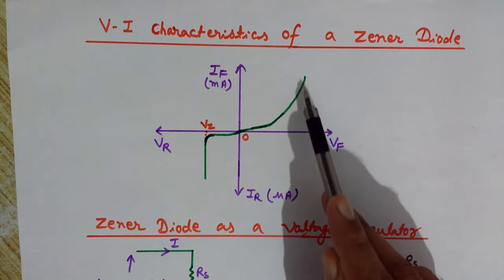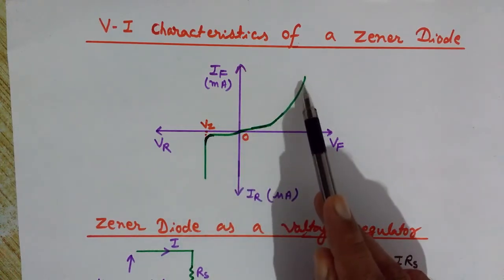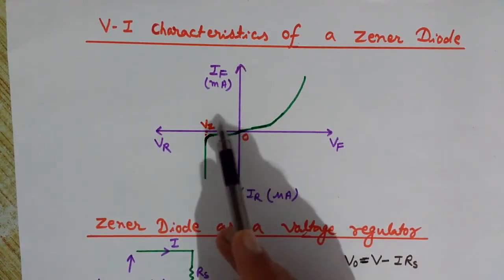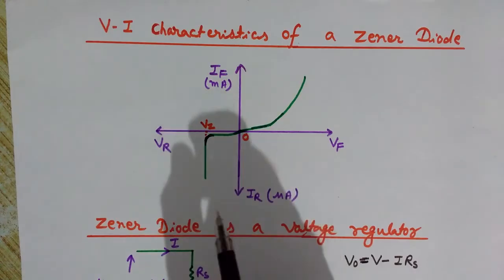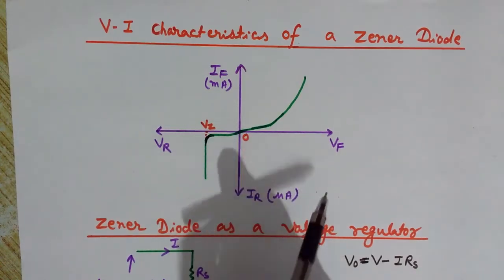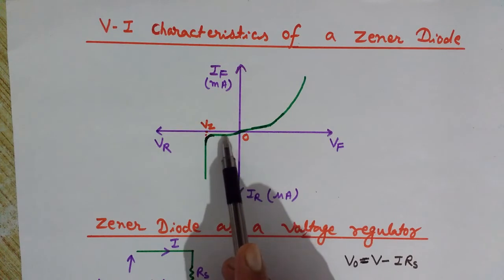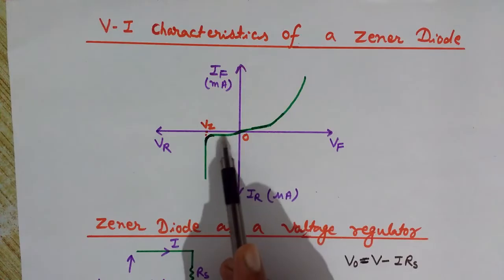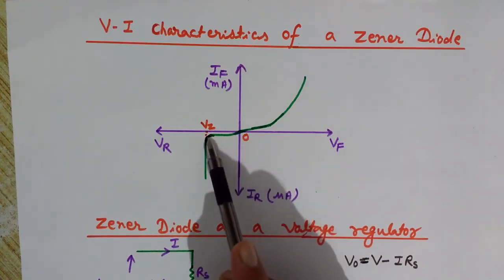Now let's look at the VI characteristic of the zener diode. In forward biasing, the curve looks similar to a normal diode. As we are concerned with the reverse voltage part, observe that when we increase the reverse voltage the current is nearly constant — this is known as the reverse saturation current. At a certain voltage, denoted as Vz, this is the breakdown voltage for the zener diode.